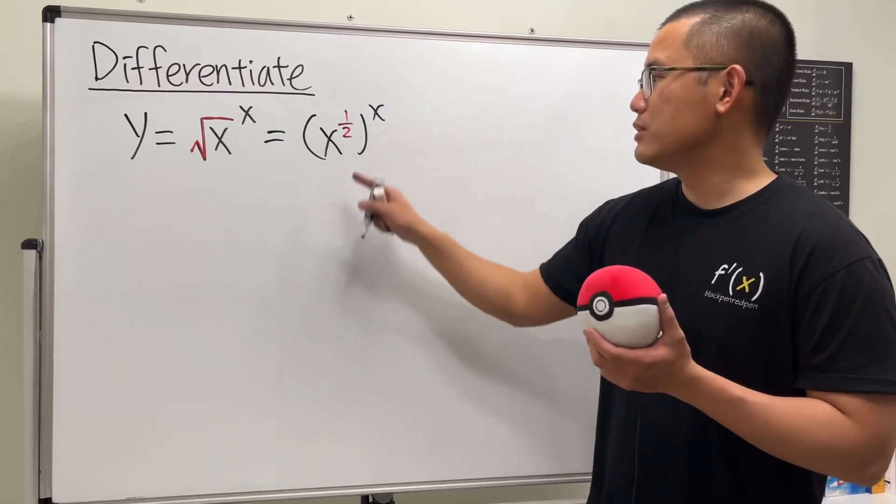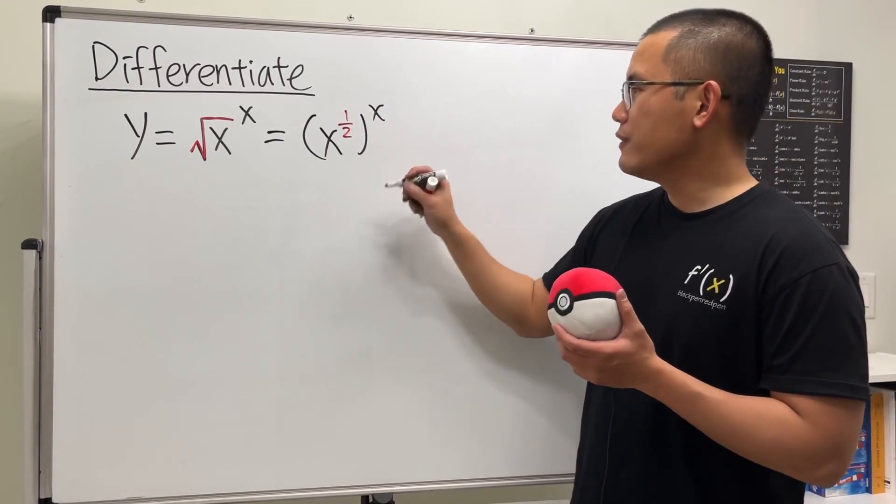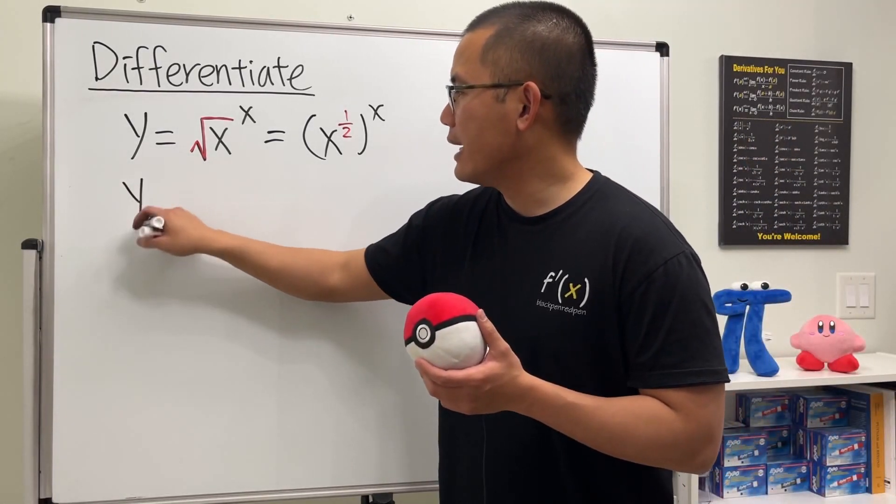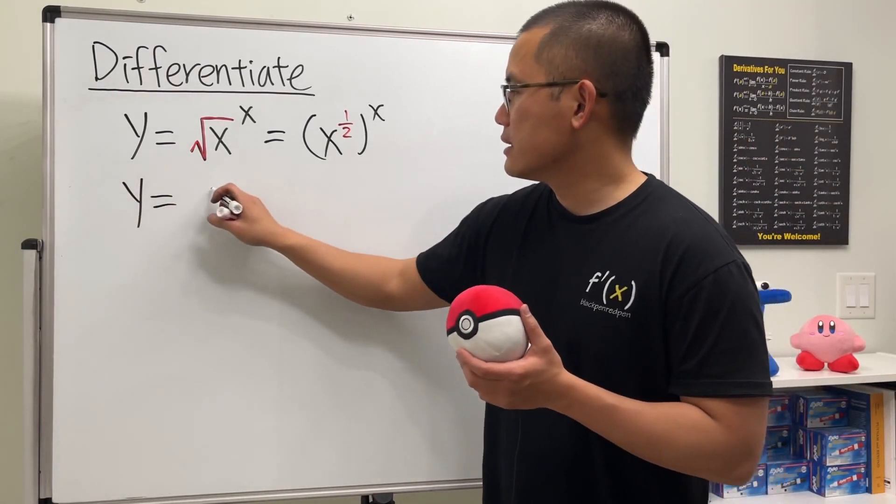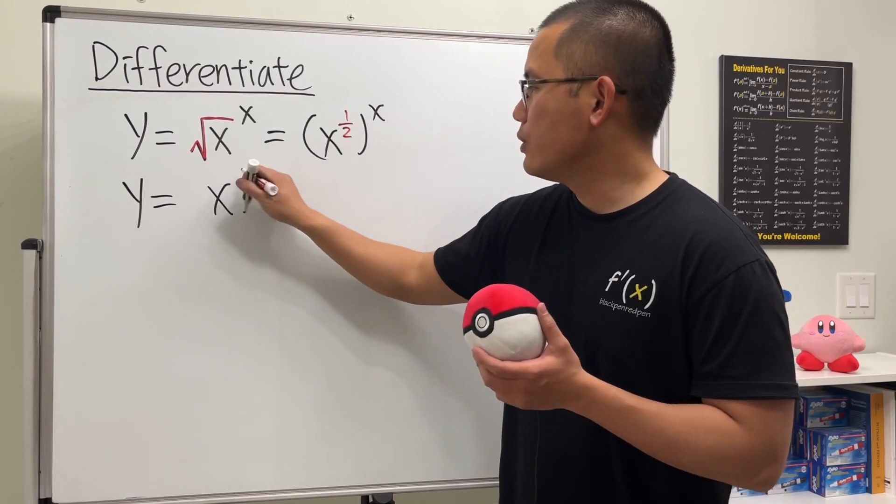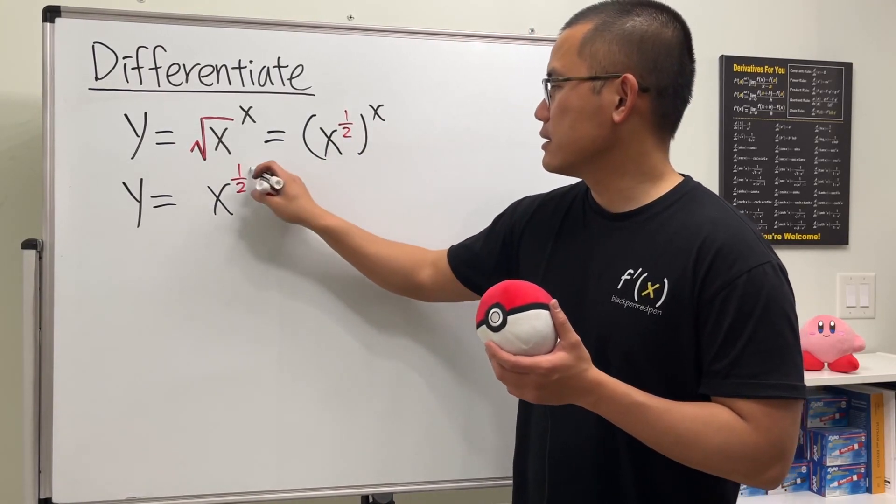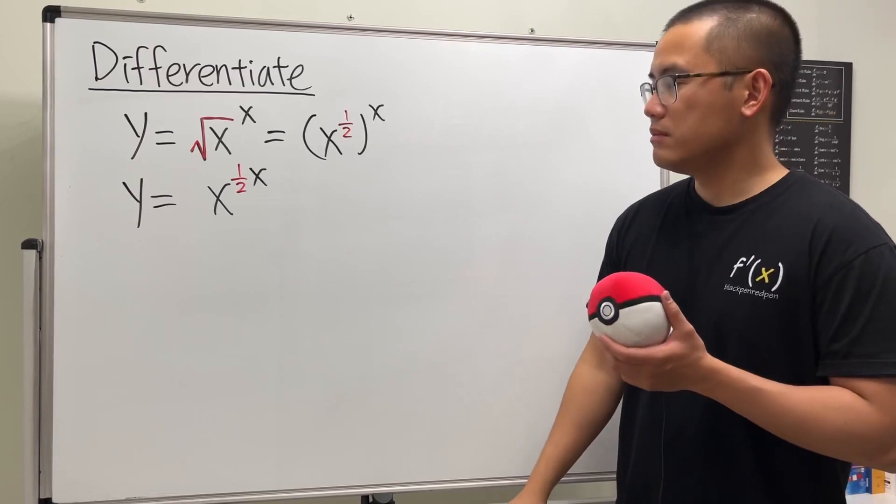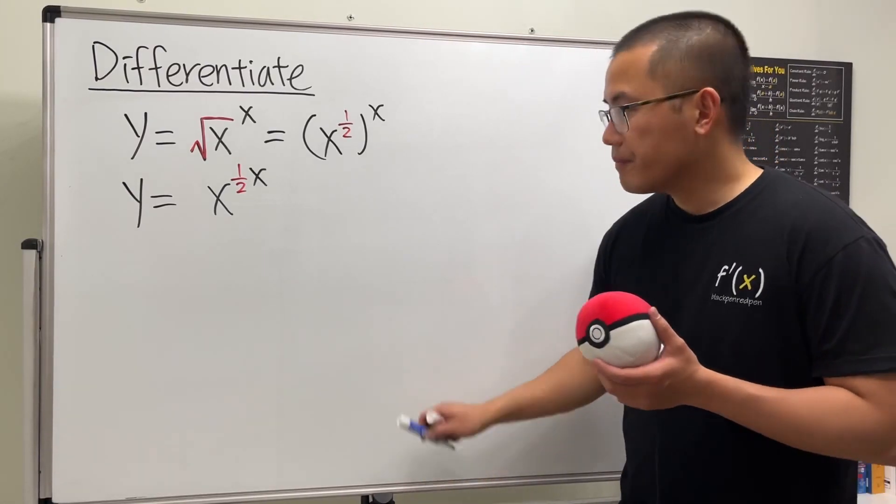What we can do is just multiply the powers. So in fact, this right here is the same as saying y equals x to the one over two times x. One half power of x.